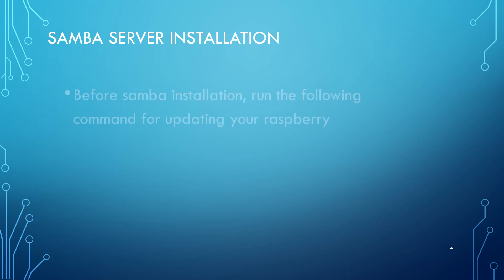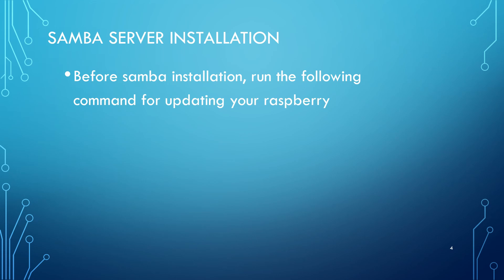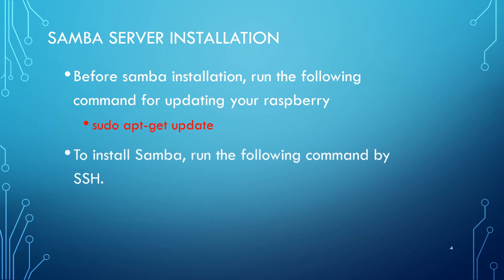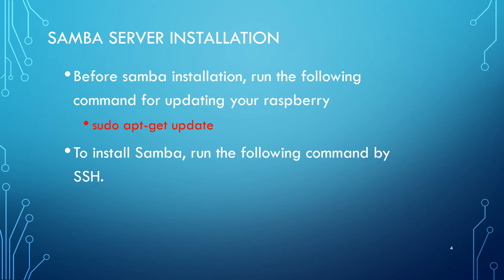Before we install the Samba Server, run sudo apt-get update to update the Raspberry Pi. Otherwise, you may encounter a failed installation, as shown in video 1. After updating the Raspberry Pi, type sudo apt-get install Samba. The entire procedure is shown in video 2.